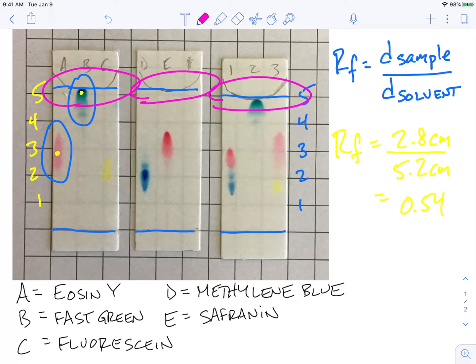So you almost could kind of go across and say, oh, do we have something in one of our unknowns? And I would definitely probably make a good guess without doing the math here that in sample unknown number three, that we probably had Eosin Y sample or known A.